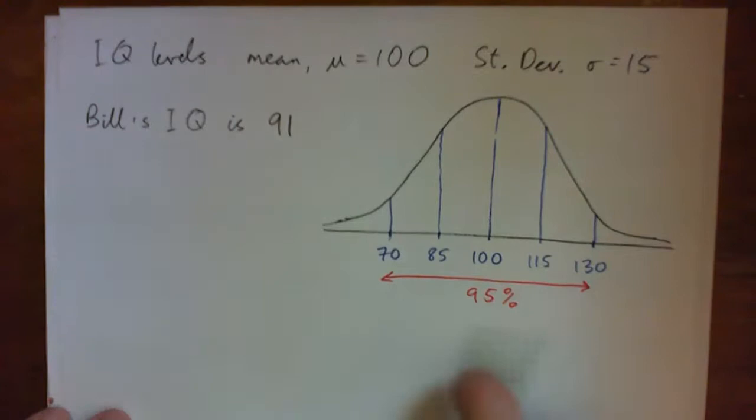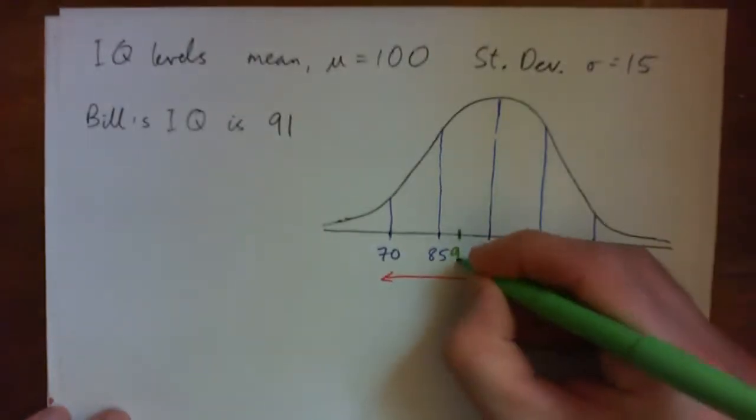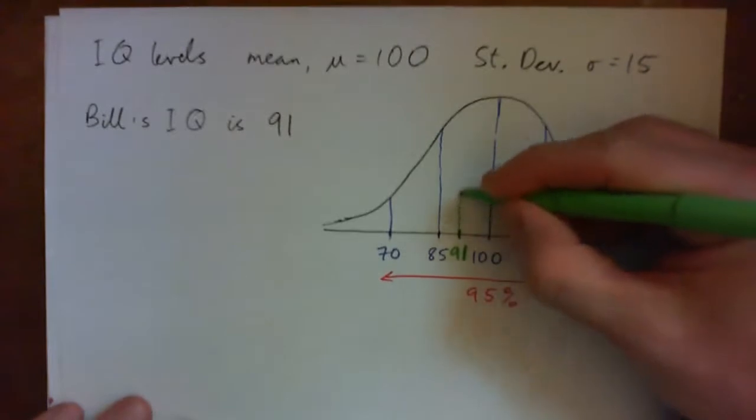So anyway, so 91 occurs around here somewhere, 91. And that's Bill's IQ, right?